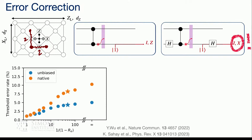If you had a bias-preserving CNOT gate, this improvement would be even higher. For pure Pauli noise the threshold is about 1%; for pure erasure it would be 10.3% versus 5%; and for our 98% erasure fraction the threshold is about 8%. So that's the circuit-based result.